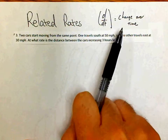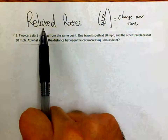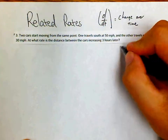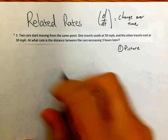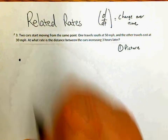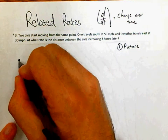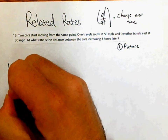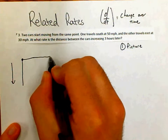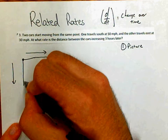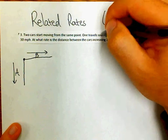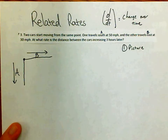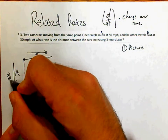Remember, related rates means you are taking derivatives with respect to time and looking at multiple variables and how they change over time — they are related because they affect one another. Your first step, always, for a word problem is to draw a picture. We have two cars starting from a point: one travels south, one travels east. Let's call the southbound car A and the eastbound car B.